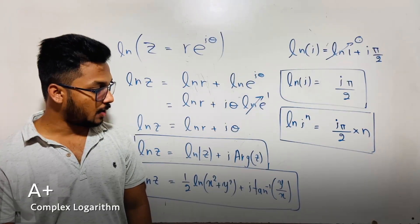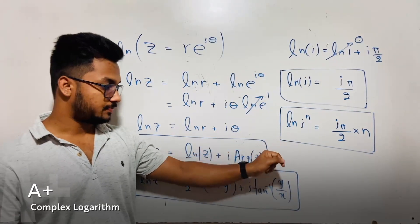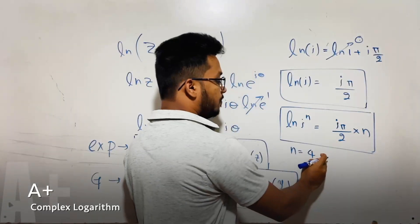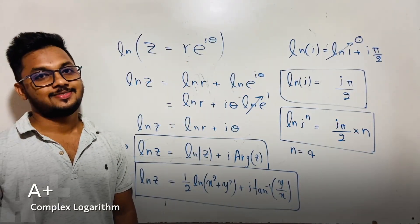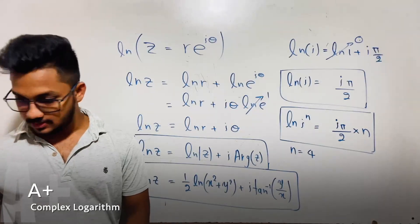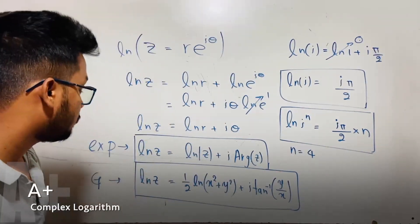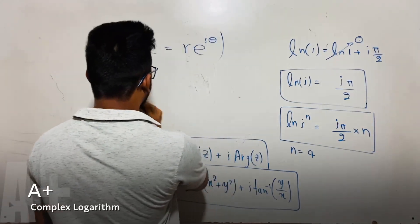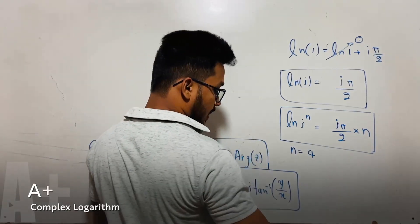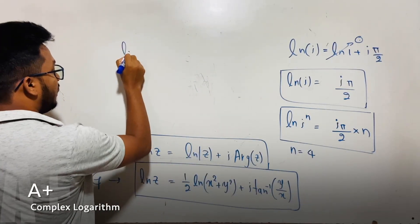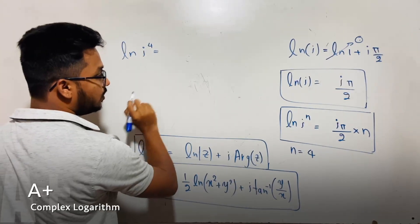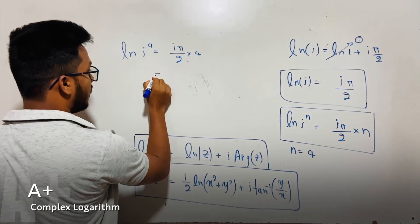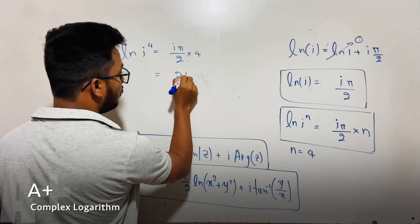Now, what will happen if n equals 4? I will erase this. If n equals 4, ln i to the power 4 equals i π by 2 into 4, and this gives us 2 i π.